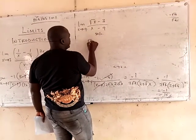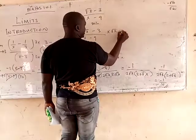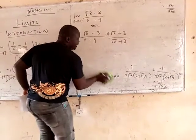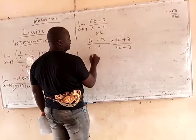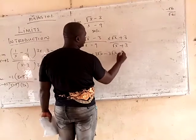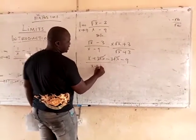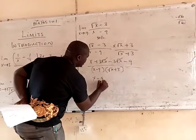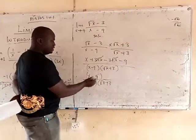So this is the solution: you have root of x minus 3, all over x minus 9. And the conjugate of the side containing the root is root of x plus 3, all over root of x plus 3. The next thing is to multiply out the numerator. Root of x times root of x gives you x. This times 3 gives you plus 3 root of x. Minus 3 times root of x gives you minus 3 root of x. Minus 3 times 3 gives you minus 9. So this cancels this, and you have x minus 9 times root of x plus 3. So you are left with x minus 9 all over x minus 9 into root of x plus 3. This will cancel this.